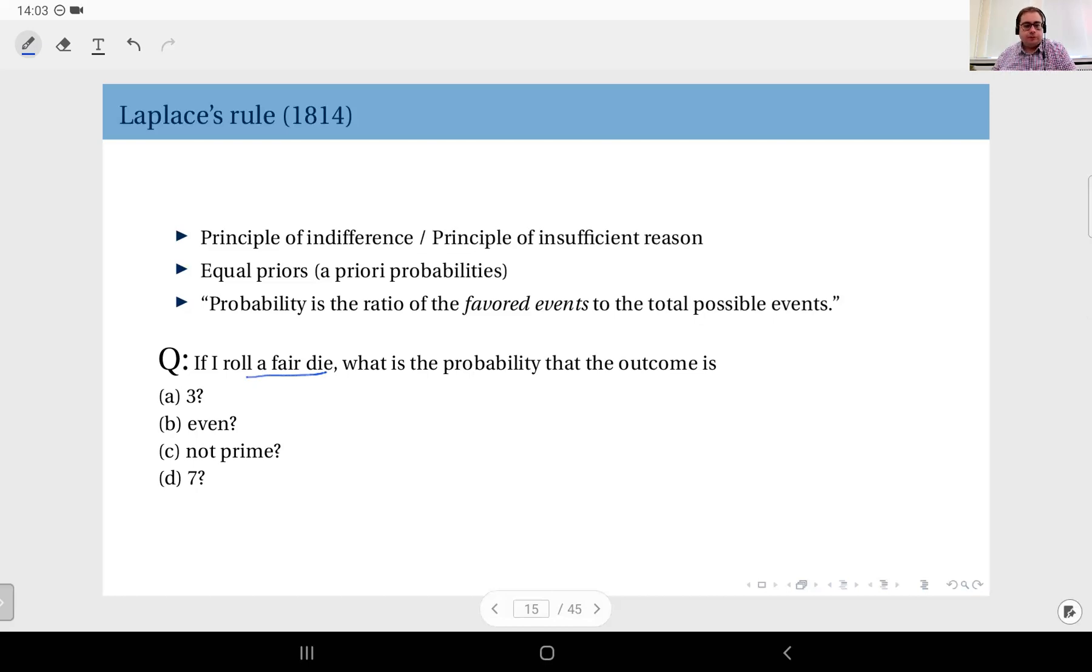But even if it's not given to you—let's say the question starts 'if I roll a die'—unless there is any information contrary, you will have to assume it's a fair die and the six outcomes are all equally likely. Therefore, the probability of the outcome being three is one in six.